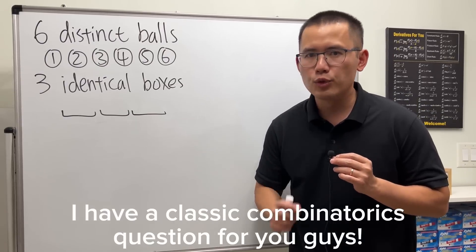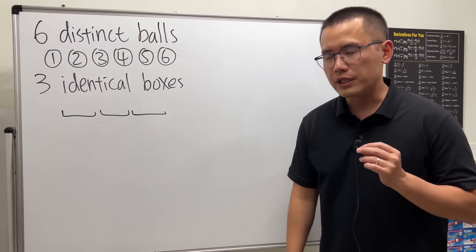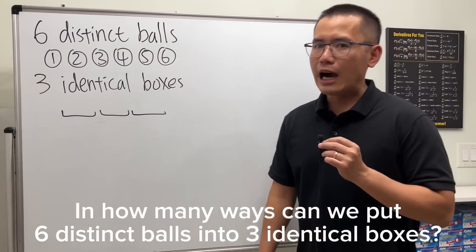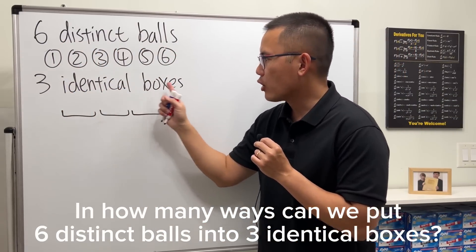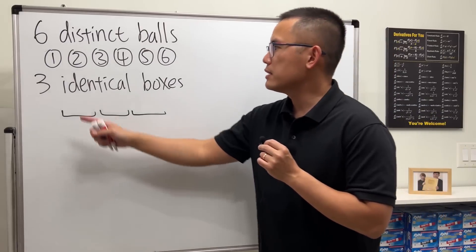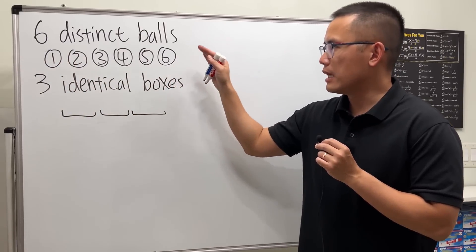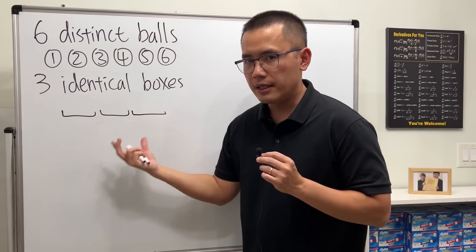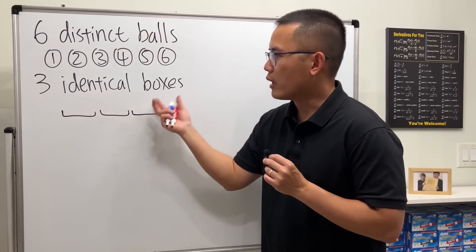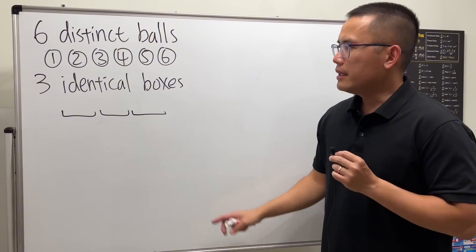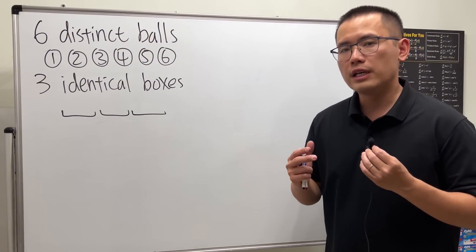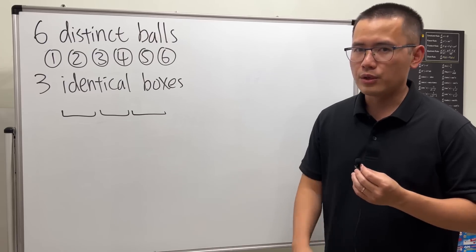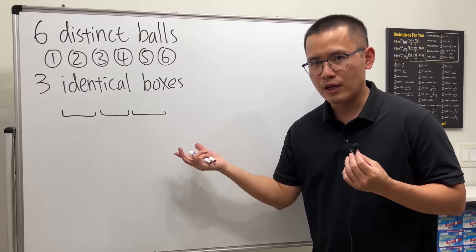Today I have a classic combinatorics question: in how many ways can we put six distinct balls into three identical boxes? The balls are numbered one to six and are all distinct, but the boxes have no labels, showing that they are all identical. This is one of the famous questions from the '12 Ways' in combinatorics. Mr. Lee from Taiwan asked me this question when I was in Taiwan this summer.